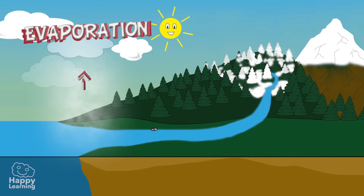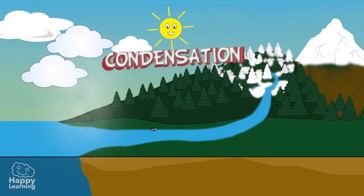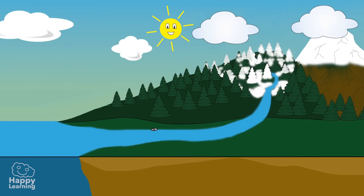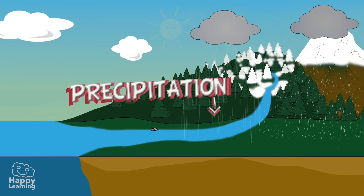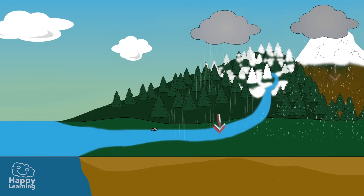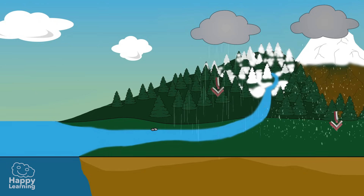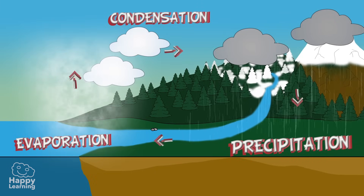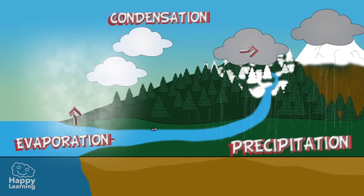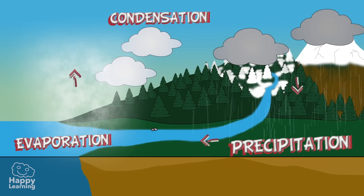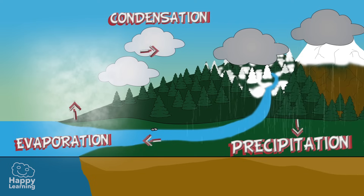Evaporation. Condensation. Precipitation. That is why it's called the water cycle, because it forms a never-ending circle. Isn't the water just so incredible?